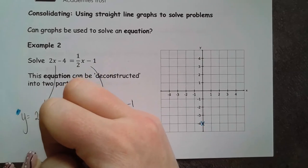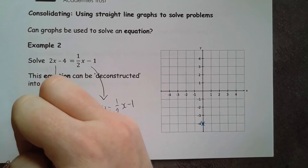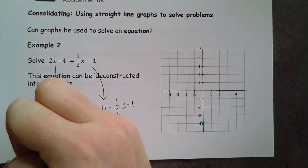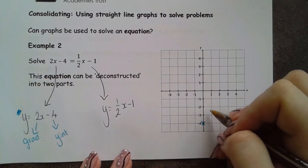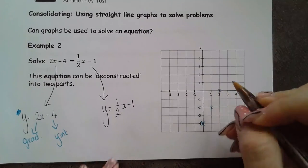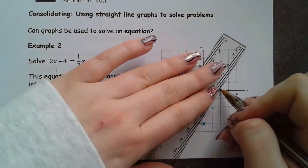I'm going through minus 4 for my y-intercept and my gradient is 2 again. So I go across 1 up 2, across 1 up 2 and I get a line that looks like this.